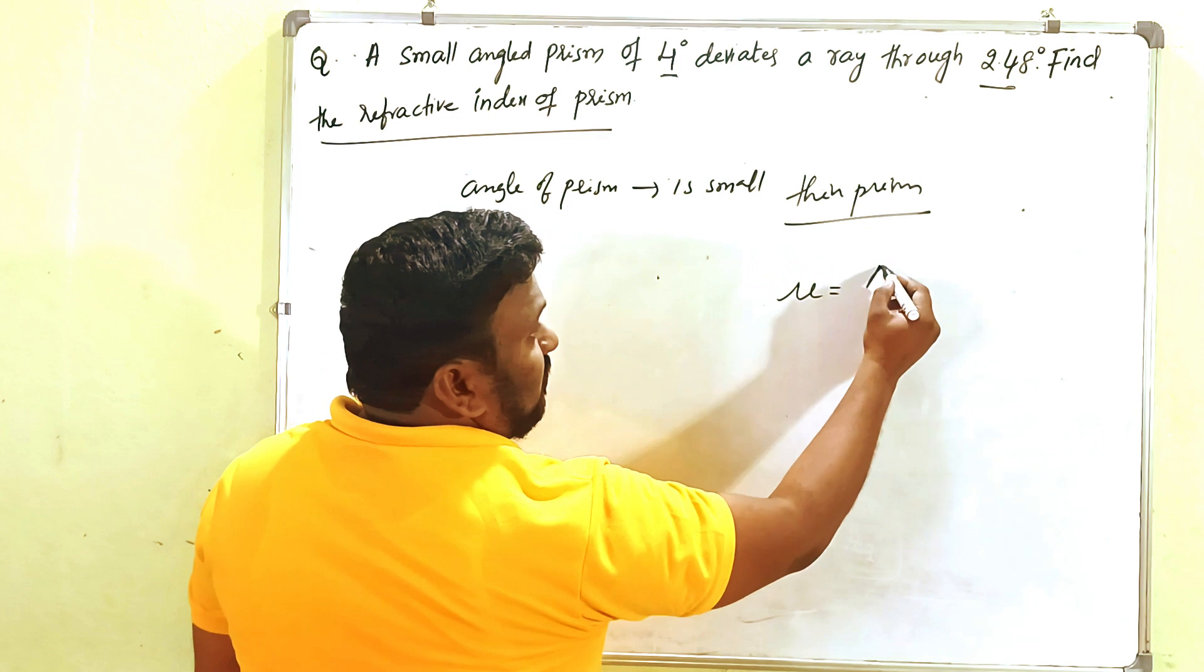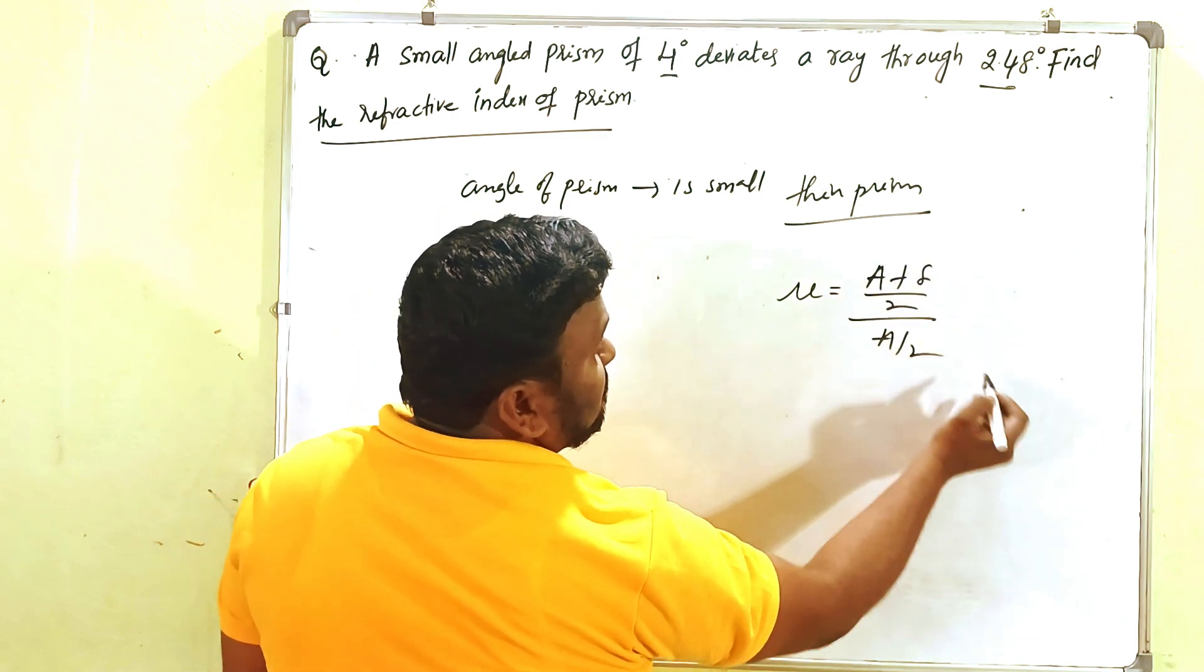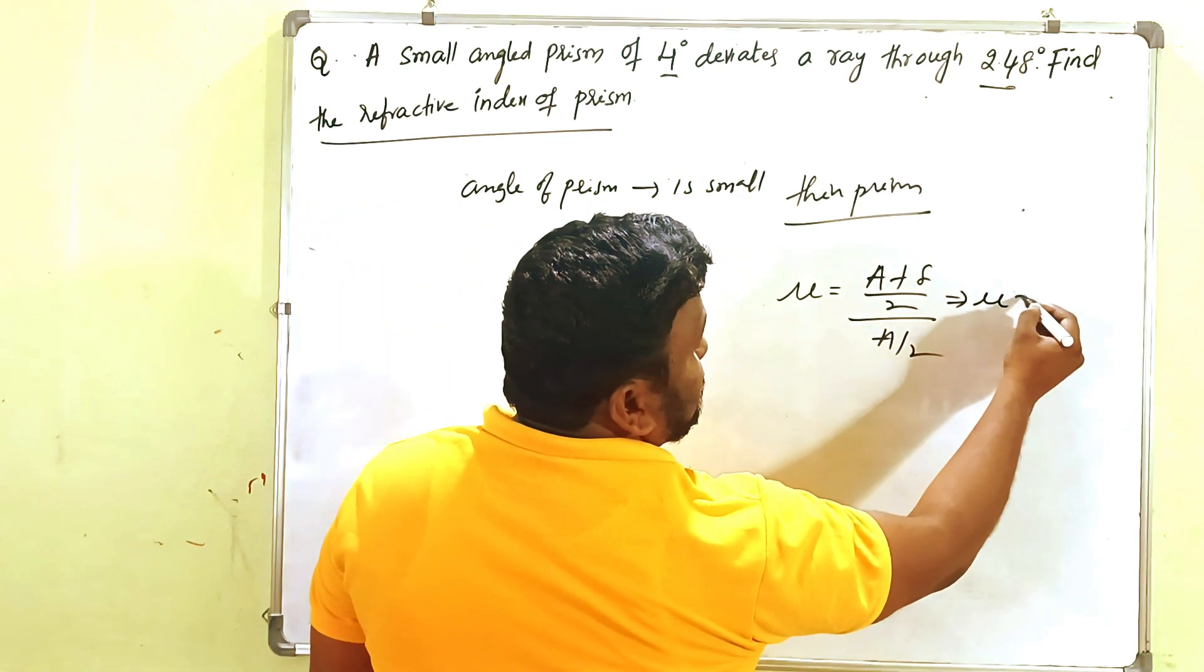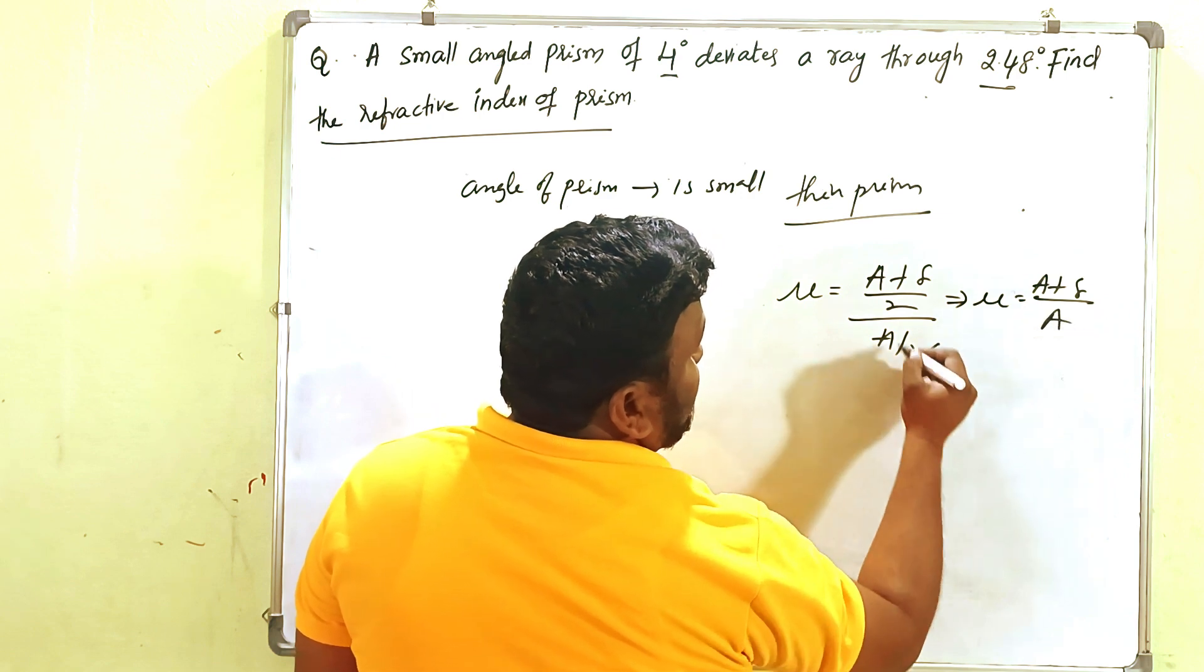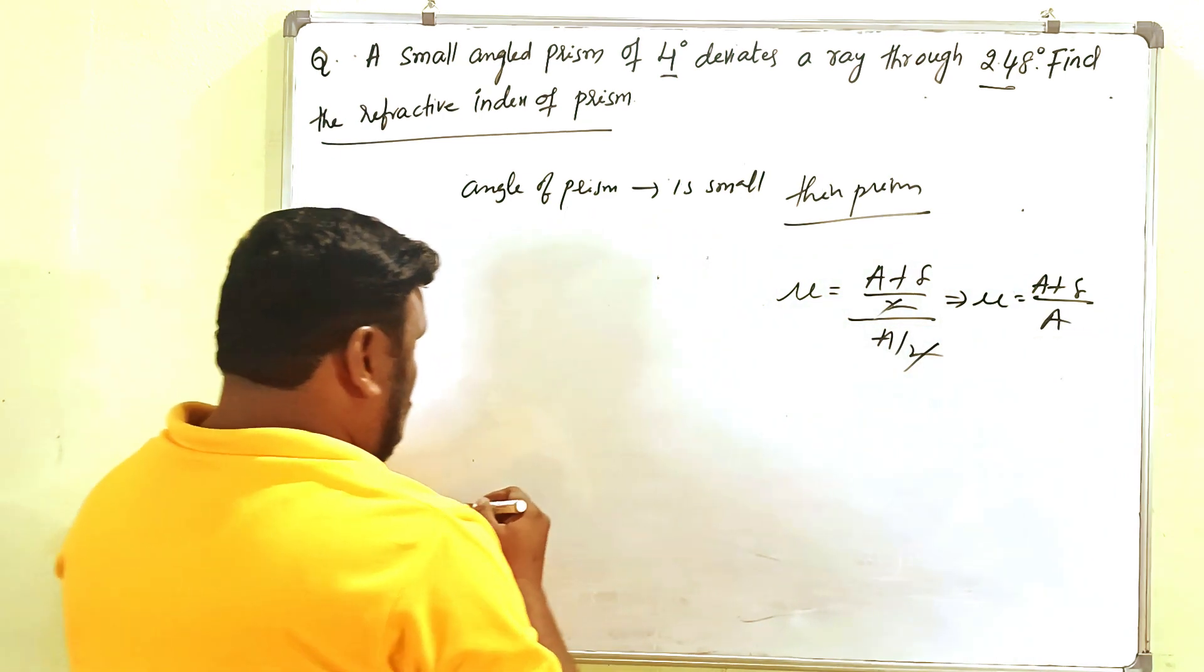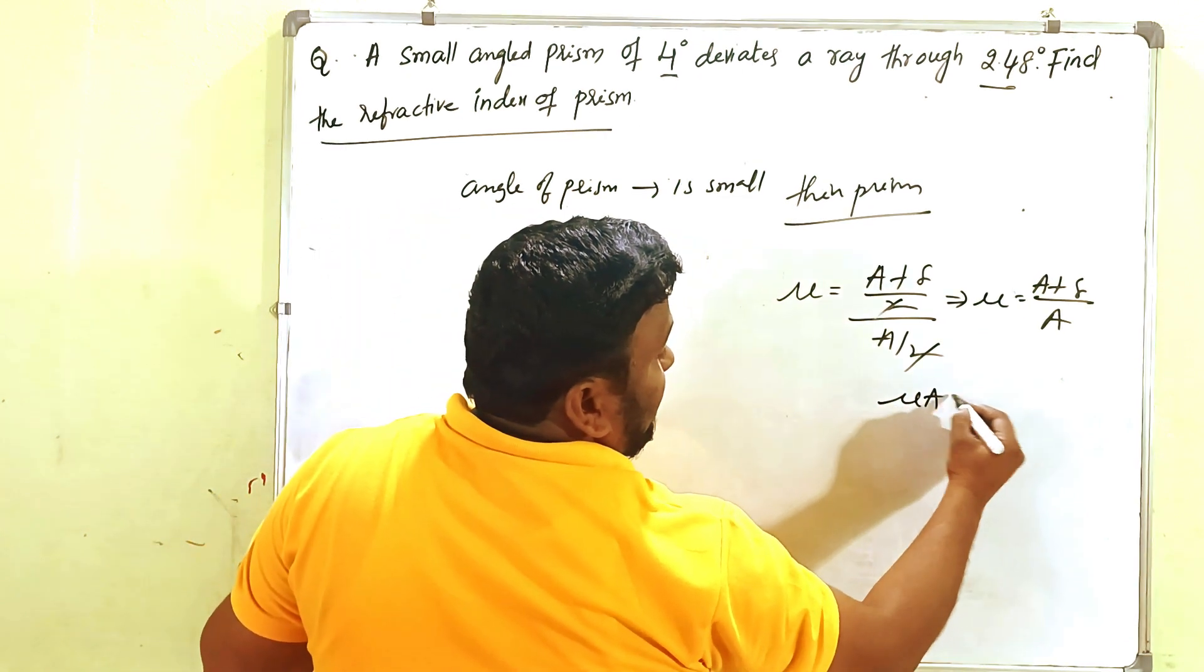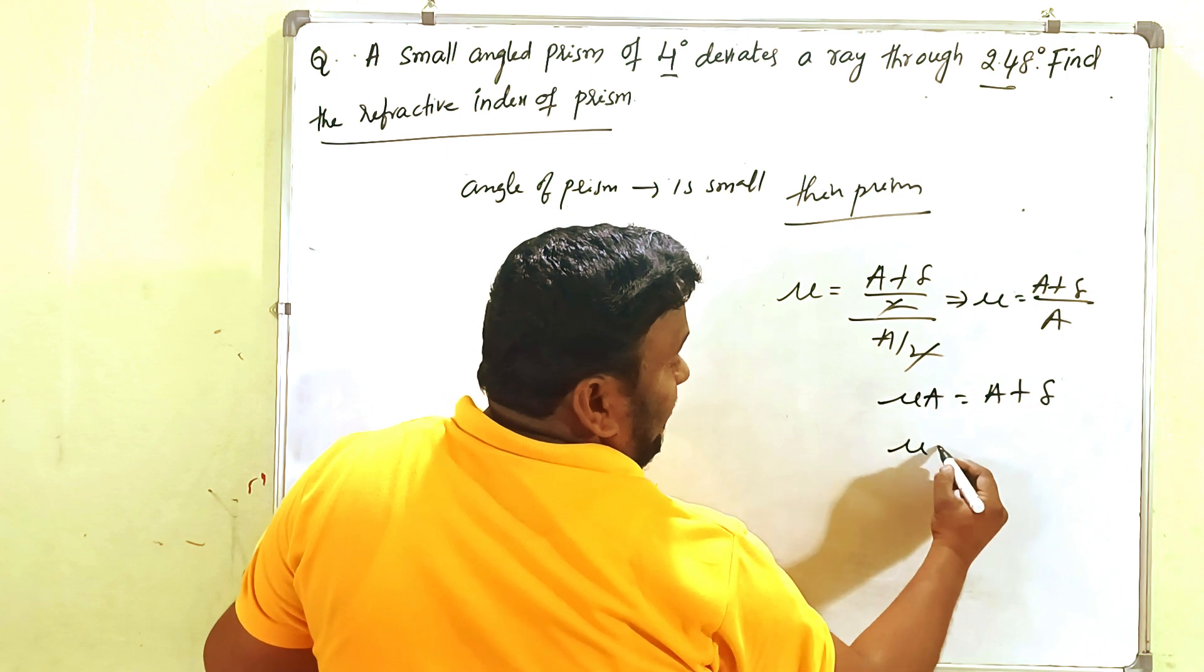From that, we write mu equals (A plus delta) by A. These twos cancel. Then we have to write: mu into A equals A plus delta.